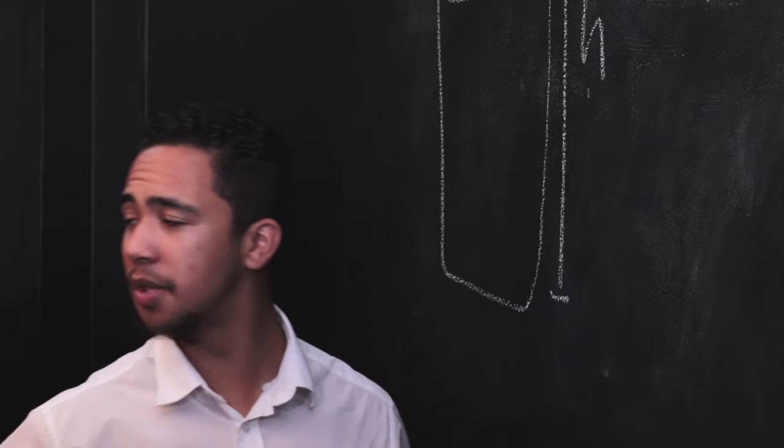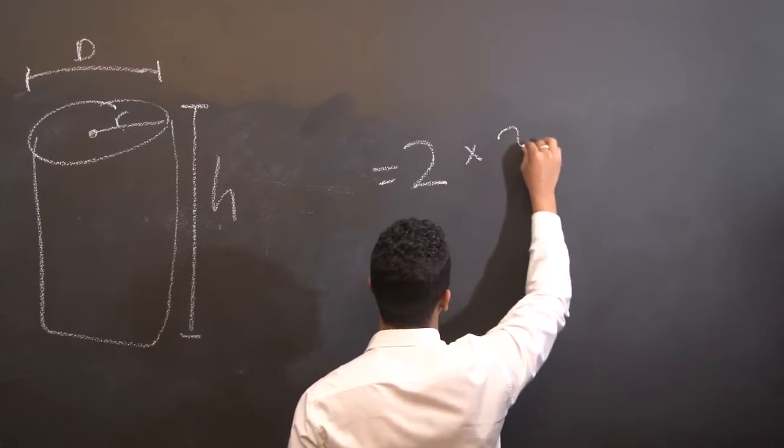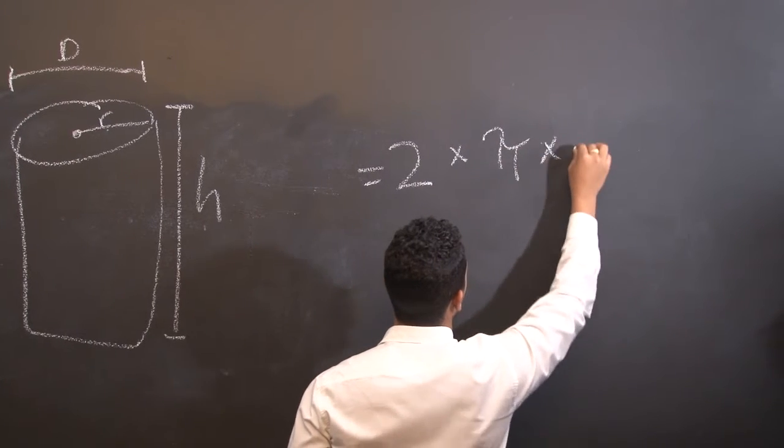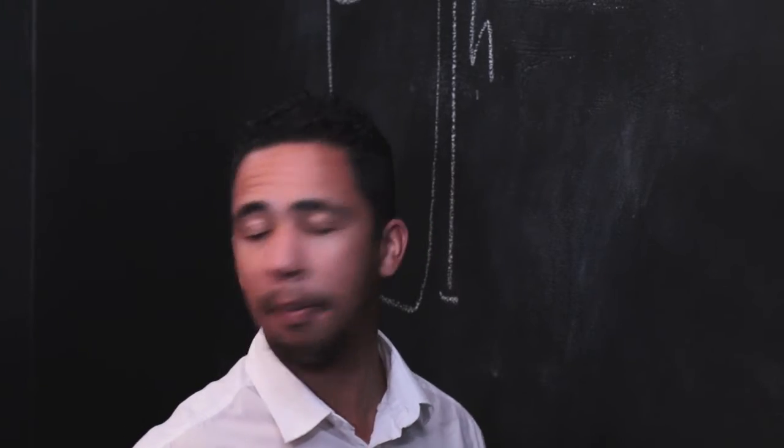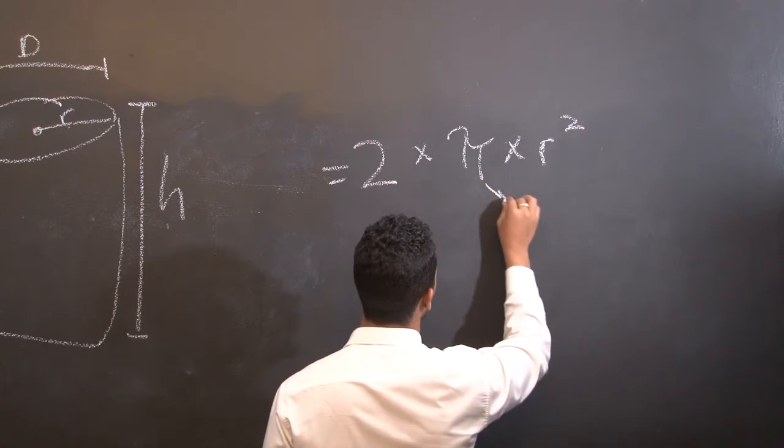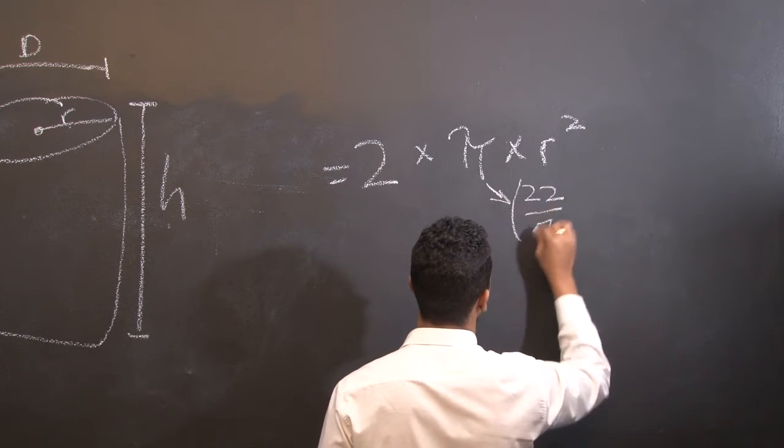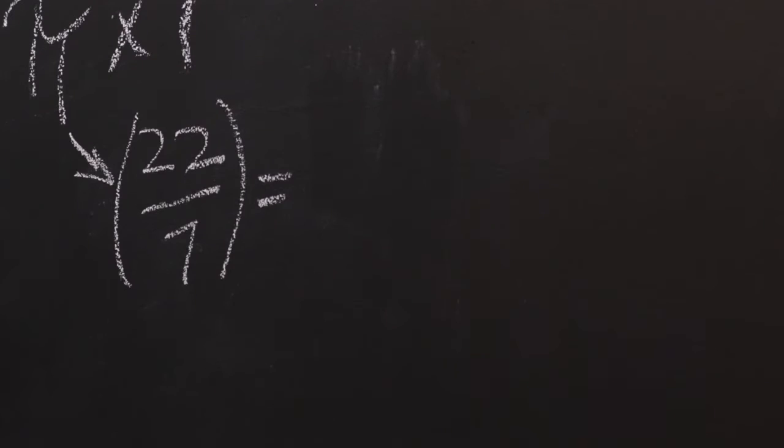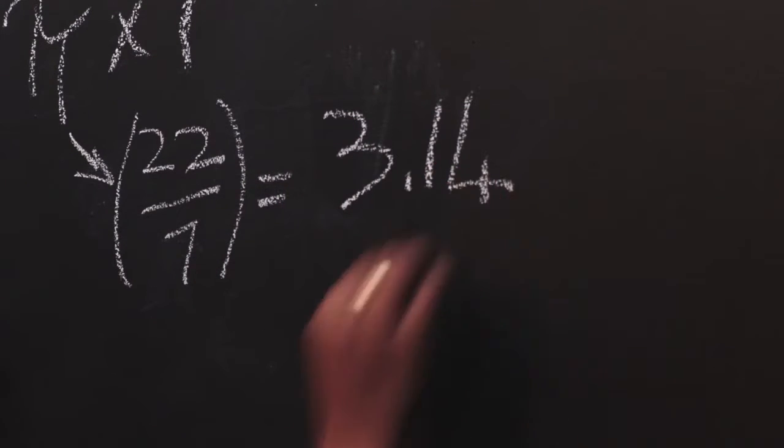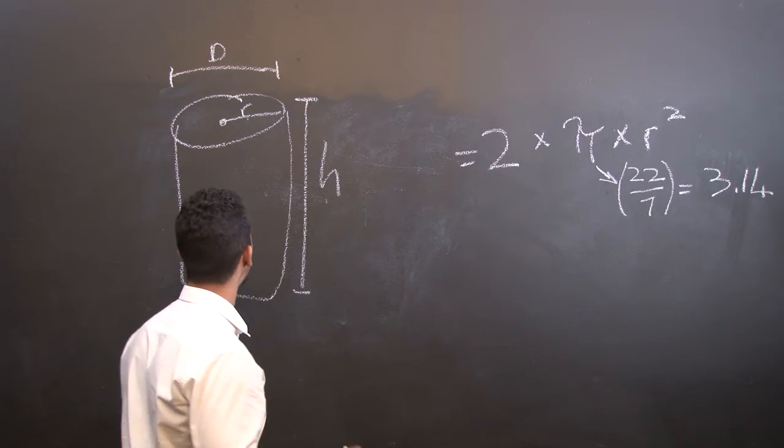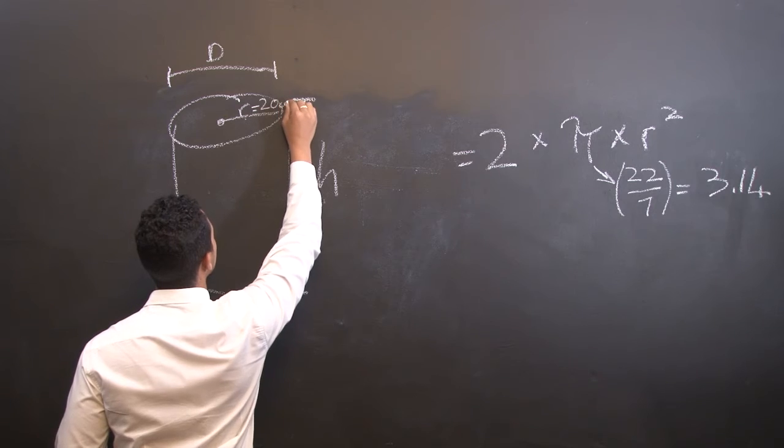The formula, as per the learner guide, is 2 times pi times r squared. Remember, pi is equal to 22 over 7, which is equal to 3.14. In this formula, we only need the radius, and in this case, the radius is 20 centimeters.